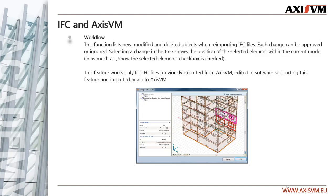There is a handy feature called Workflow. This function lists new, modified and deleted objects when reimporting IFC files. Each change can be approved or ignored. Selecting a change in the tree shows the position of the selected element within the current model. This feature works only for IFC files previously exported from AccessVM, edited in software supporting this feature, and imported again to AccessVM.